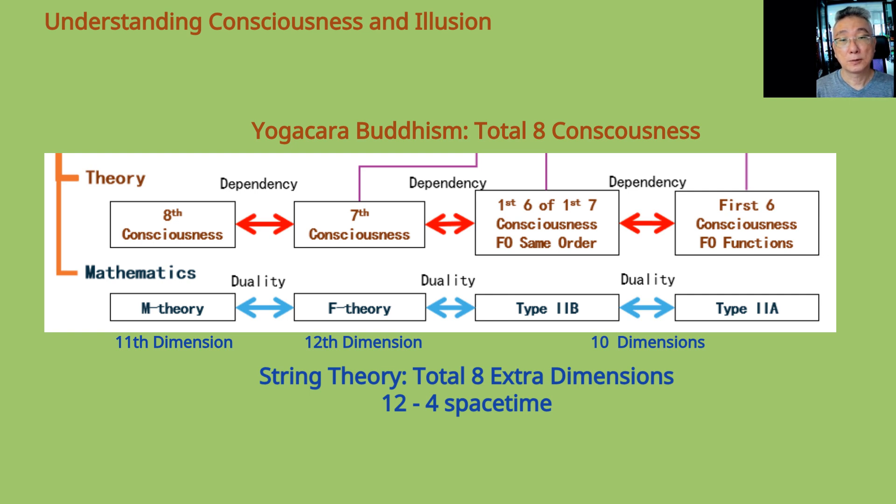These dependencies are why there exist heaps of dualities among various conjectures in string theory, namely M-theory, F-theory, type 2B, and type 2A.